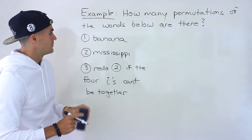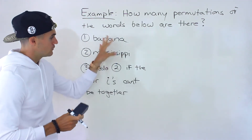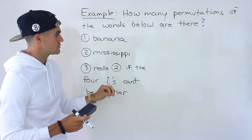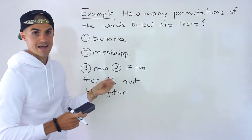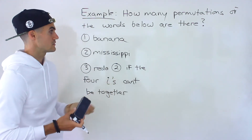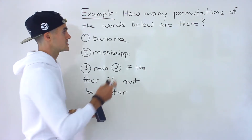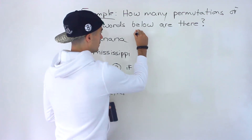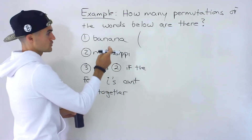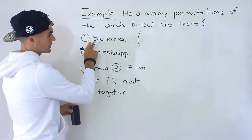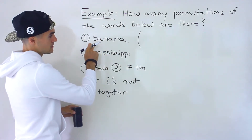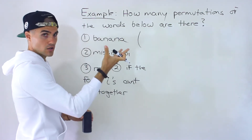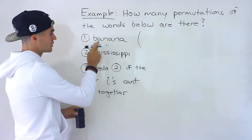Starting with number one, basically all of these are going to be expressed as multinomial coefficients. That's how you do these types of questions. The way we set up the multinomial coefficient, the top part is basically going to be the total number of letters that you're working with in the word.